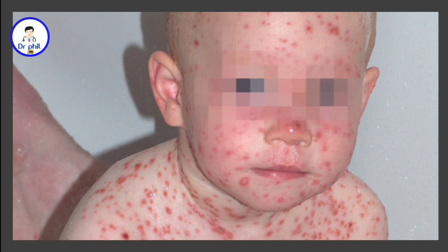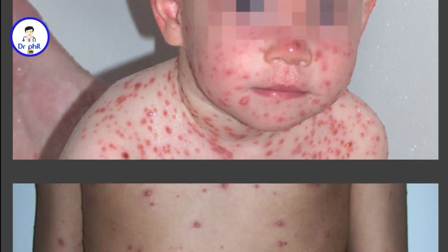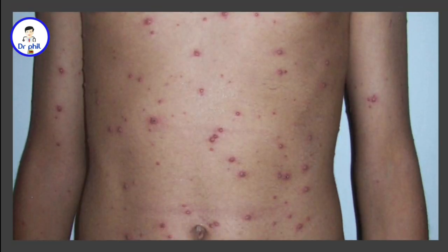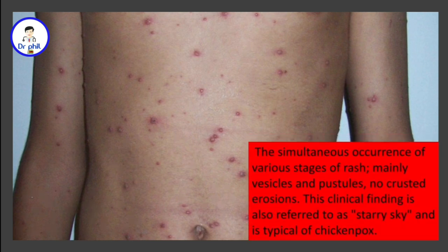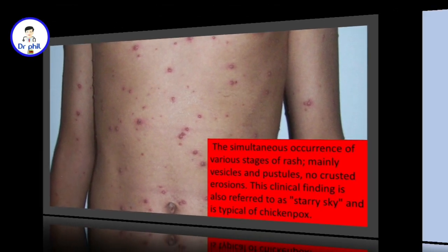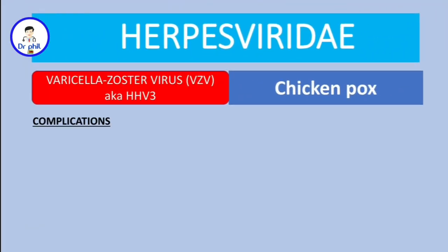Images show the different stages of the rash, including on the scalp. You can see the simultaneous occurrence of various stages — mainly vesicles and pustules, with no crusted erosions. This clinical finding is referred to as a 'starry sky' appearance and is typical of chickenpox.